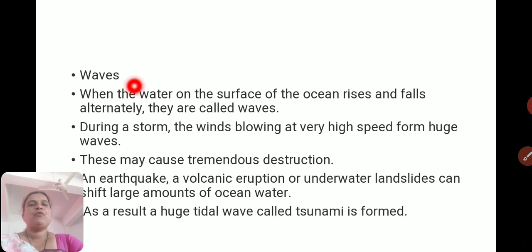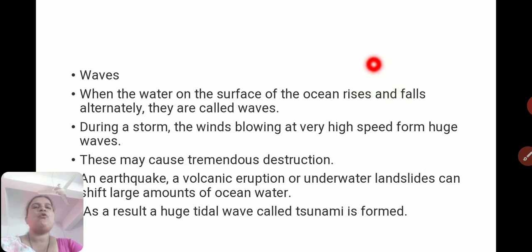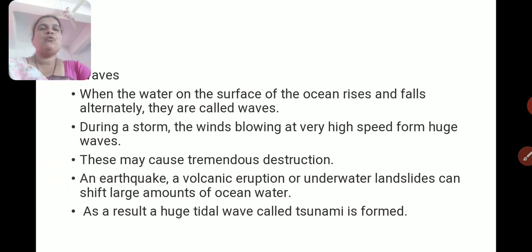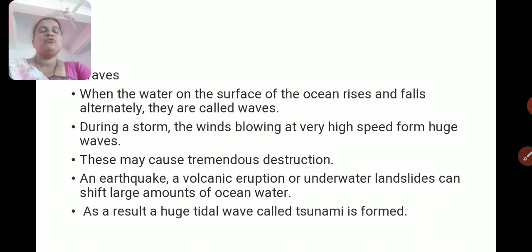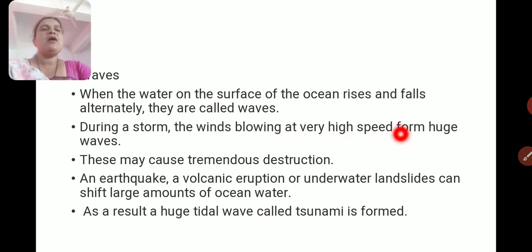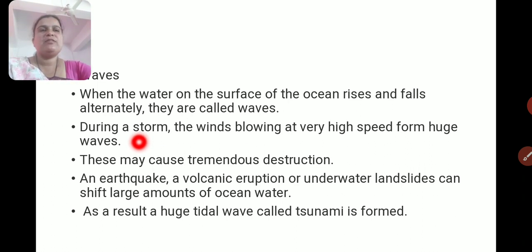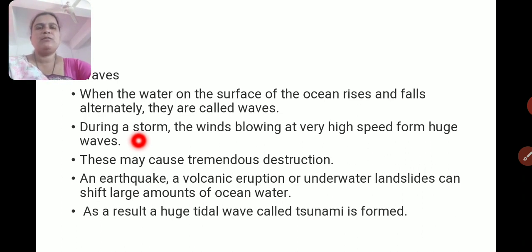What are waves? When the water on the surface of the ocean rises and falls alternately, they are called waves. As you look towards the oceans and seas, you can observe ocean water rising and falling alternately — that is called sea waves. During a storm, the winds blowing at very high speed form huge waves. Sometimes due to the storm, these waves at very high speed reach towards the sea coast and may cause tremendous destruction.